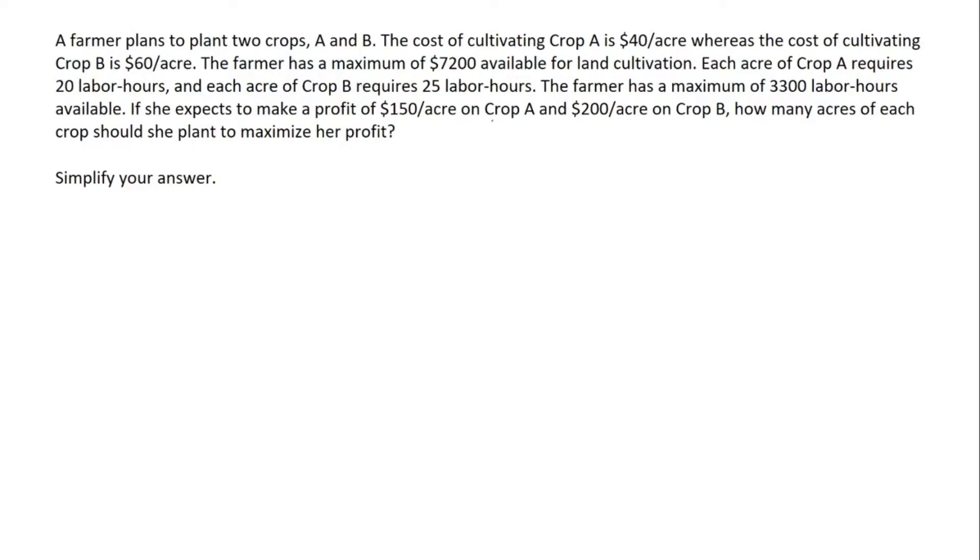Here we're given the cost of cultivating Crop A is $40 per acre whereas the cost of cultivating Crop B is $60 an acre. The farmer has a maximum of $7,200 available for land cultivation.